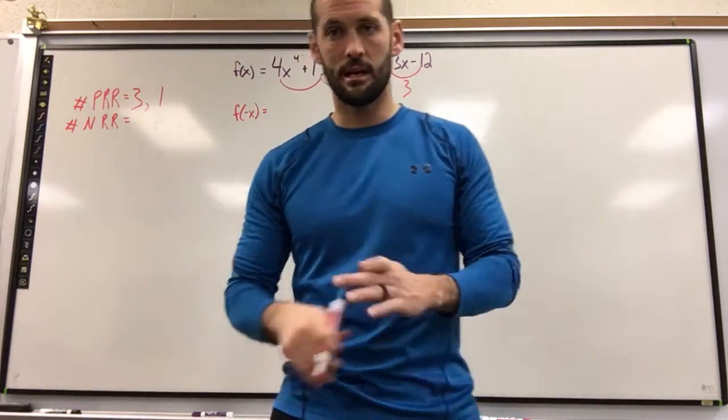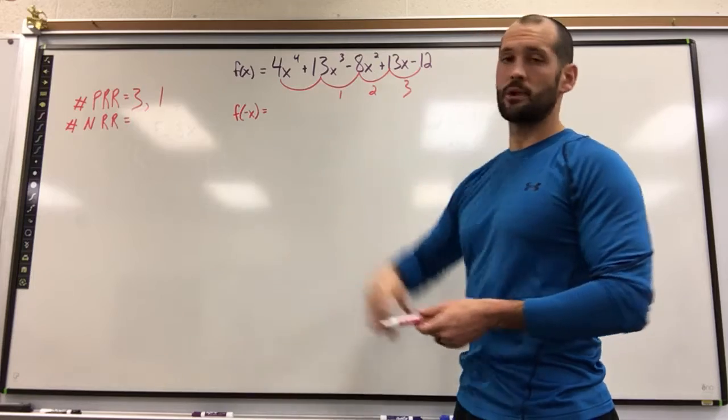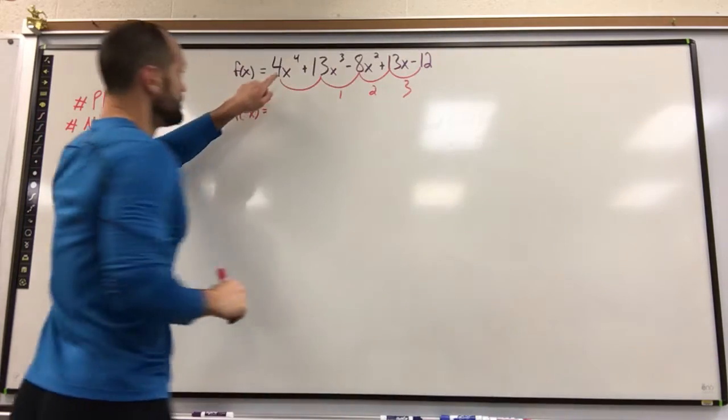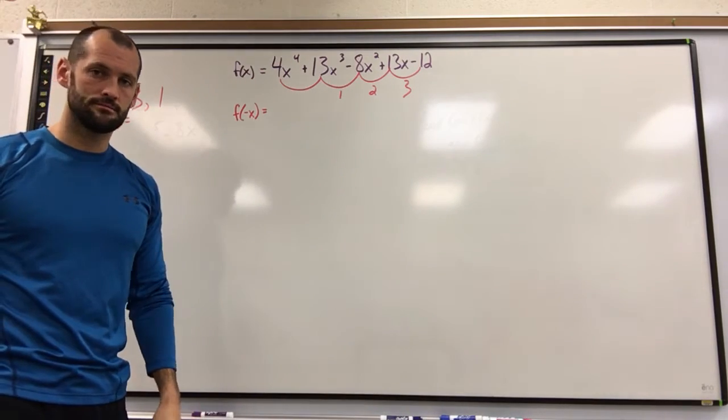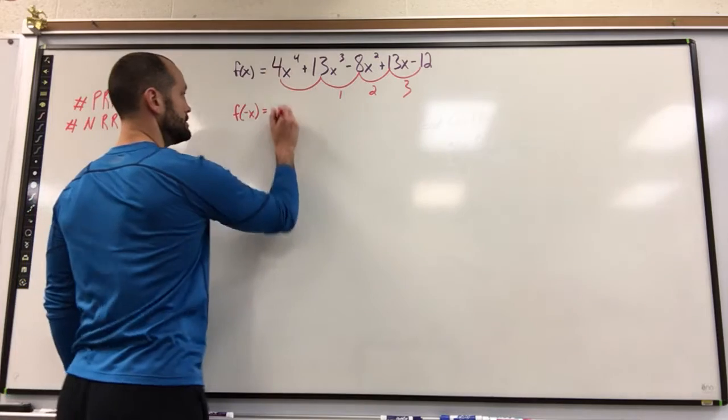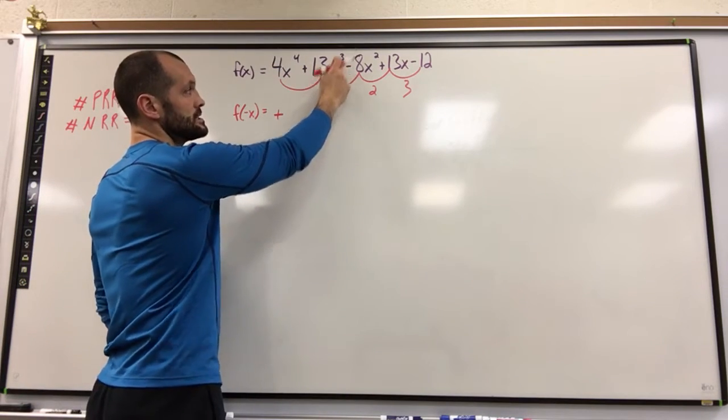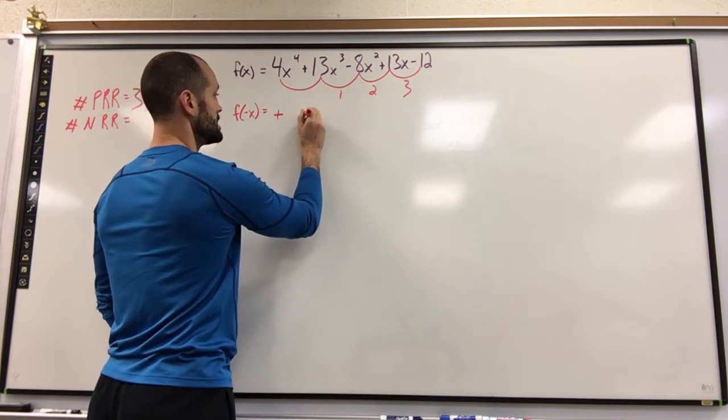What some of you have started doing, and I actually recommend, don't even worry about writing the whole equation down. Just think about whether it'll be positive or negative. If I put a negative x and do it to the fourth power, it stays positive. If I do a negative x to the third power, it becomes a negative x. Times 13 will give me a negative.